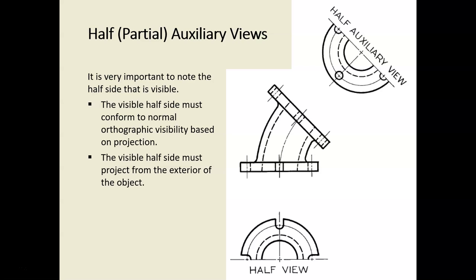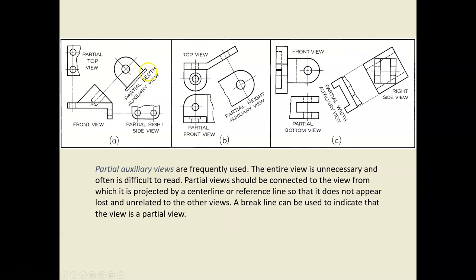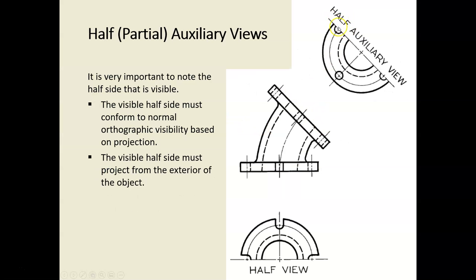Another example of a partial auxiliary view: here we use a center line instead of a break line to show only the part we want and avoid the rest. In the bottom view, we also use a partial view. The reason we can do this is because the object is completely symmetrical, so there's nothing to be gained from showing the omitted side.